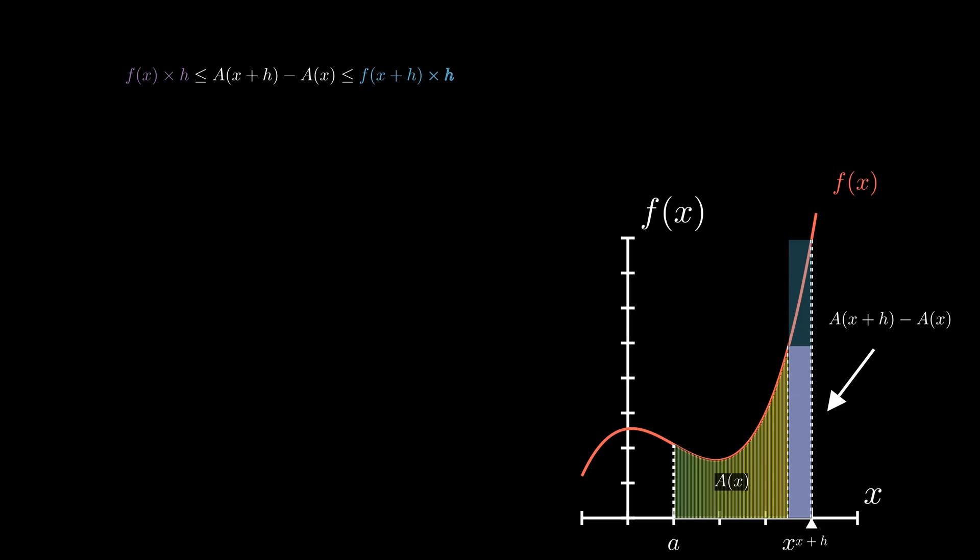So it's fair to say that the actual area is stuck between the area of these two rectangles. We can rearrange this inequality expression by dividing by h, giving us a neat expression for the actual area, which reads as,